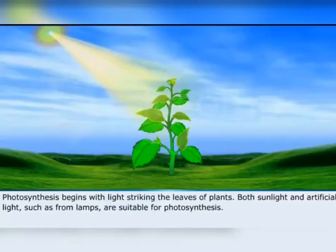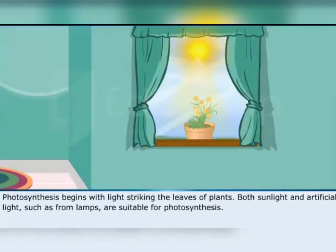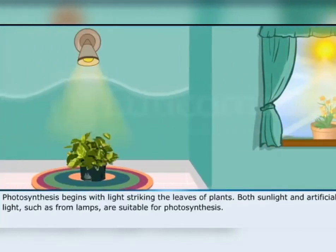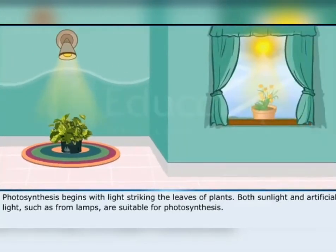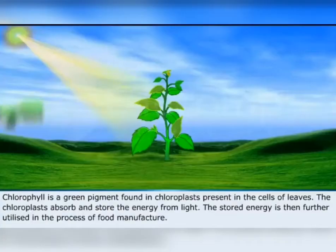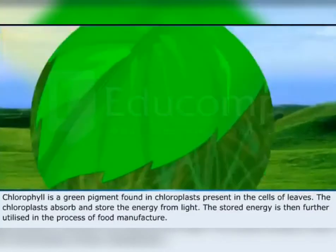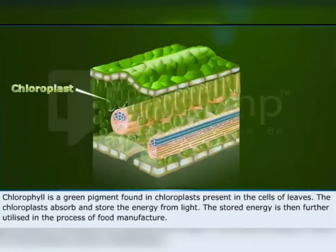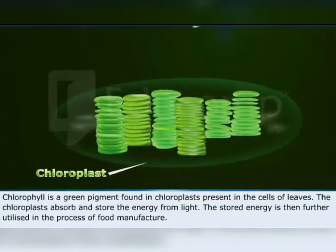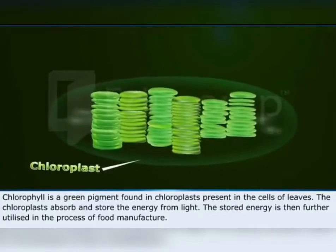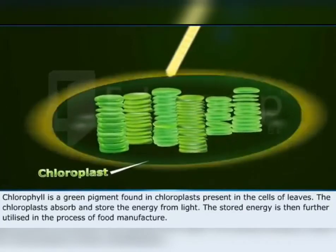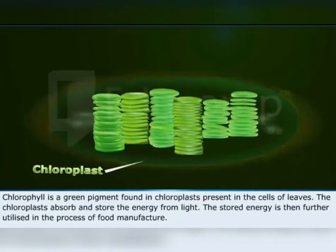Photosynthesis begins with light striking the leaves of plants. Both sunlight and artificial light, such as from lamps, are suitable for photosynthesis. Chlorophyll is a green pigment found in chloroplasts present in the cells of leaves. The chloroplasts absorb and store the energy from light, which is then further utilized in the process of food manufacture.